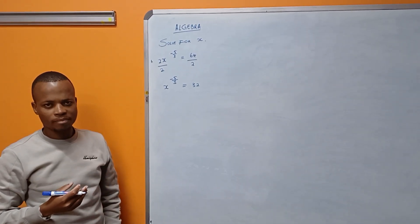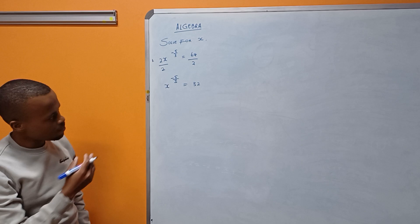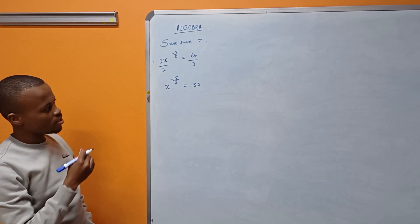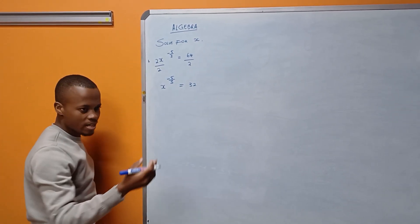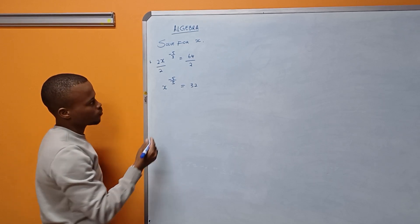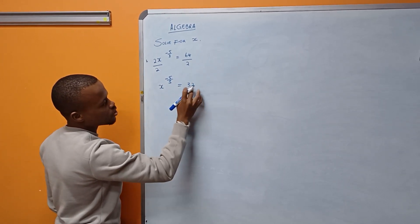There is something that I can do here. There are many things that I can do, but the easy one is to write 32 in terms of 2. This is the power, and I have to write 32 in terms of powers.